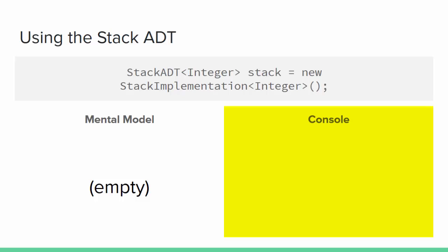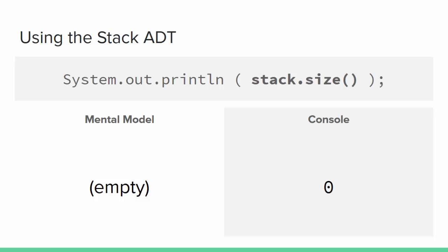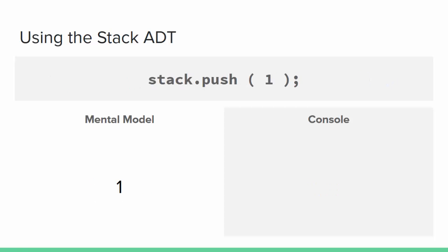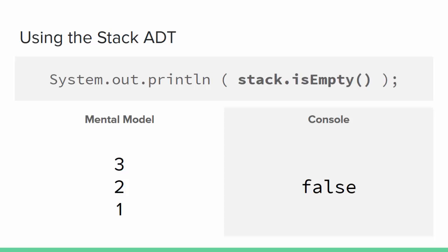The following example assumes there is a class that implements the stack ADT interface we just defined. The sequence of statements could be in the main method of a driver class. I'm also showing the current contents of the stack according to our mental model, and I'll show console output from any print statements as we go. First we create our stack by calling the constructor of our class and storing it in a stack ADT reference. Before anything has been added, we check the starting size — a new stack has nothing in it so its size is zero. The isEmpty method returns true because the stack is empty.